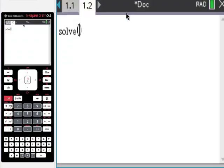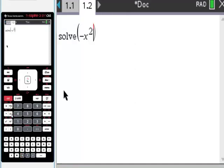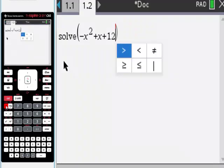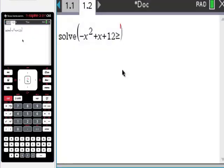Either way you get exactly the same thing. And let's use the equation negative x squared plus x plus, I don't know, 12 is, let's make it greater than or equal to. So I'm going to just go here, control, greater than or equal to 0, comma x, really important.